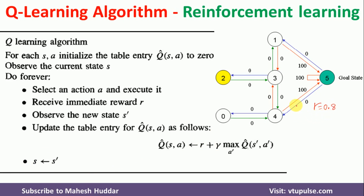As per the algorithm, we have the set of states S: {0, 1, 2, 3, 4, 5} and the set of actions A: {0, 1, 2, 3, 4, 5}. Now we need to select and observe a current state. Assume I select state 3, so S becomes 3.